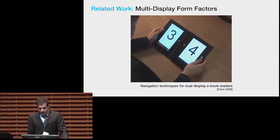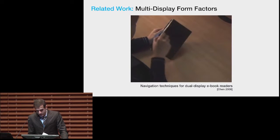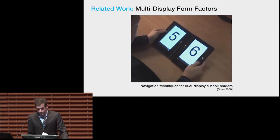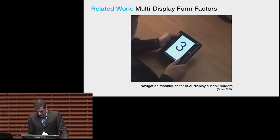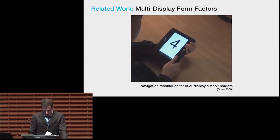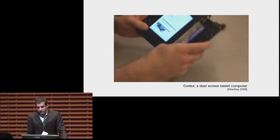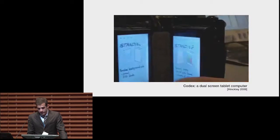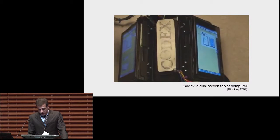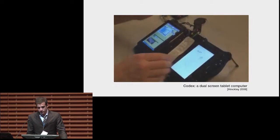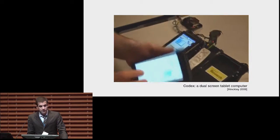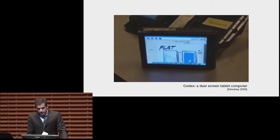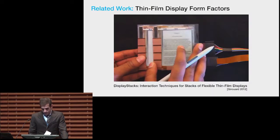Chen discussed an e-book reader featuring two displays mounted on two separate slates that can be used in side-by-side or detached configurations. Their design supported embodied navigation techniques like folding, fanning, or flipping. Codex featured a dual-screen tablet computer which could be detached and rearranged into various form factors, oriented in a variety of postures to support individual work, ambient display, or collaboration. However, the rigidity and thick form factor of the displays used in these explorations pose real drawbacks in terms of portability and physical effort.